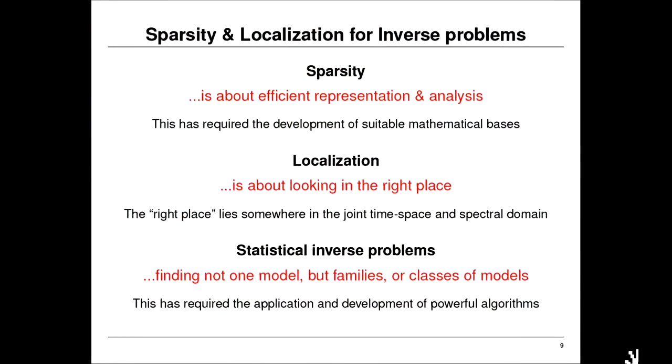In terms of inverse problems, this is about explaining data — which is ultimately a statistical operation, not just an optimization. It's no longer just about finding the best model, but also characterizing the uncertainty around it, perhaps finding entire families of models that all equivalently explain the data, and then drawing inference from these ensembles to say something useful about the Earth and planets. Putting sparsity and localization — via mathematical bases or by zooming into the right time-frequency or spatial-spectral domain — into the context of geophysical inverse theory is where we develop the algorithms to do that.